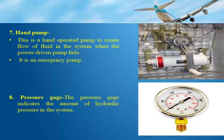The hand pump is a hand-operated emergency pump used to create flow of fluid in the system when the power-driven pump fails. A pressure gauge is also fitted in the system to indicate the amount of hydraulic pressure in the system.